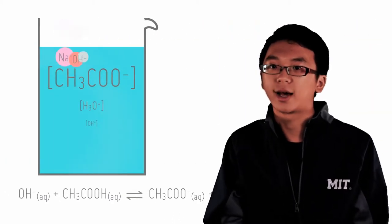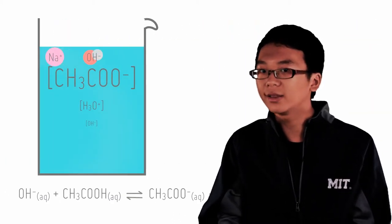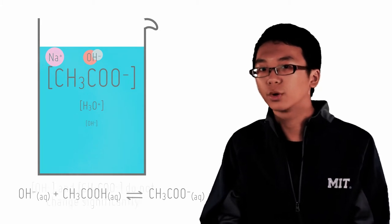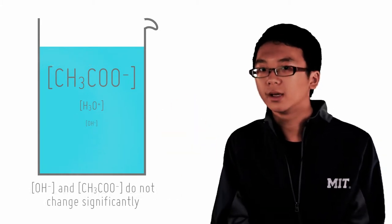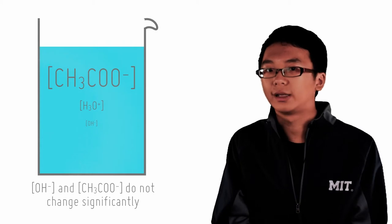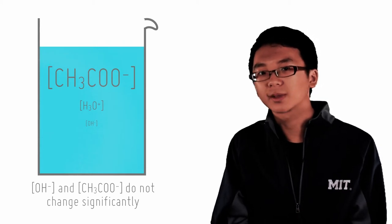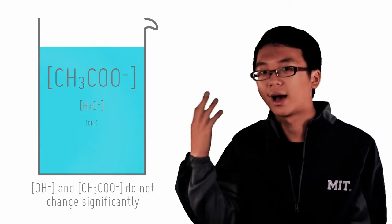The base will release hydroxide ions in water, which reacts with the undissociated acid to produce water and the conjugate base, both of which do not contribute directly to the pH. Hence, the acid mops up small trace amounts of hydroxide ions as well.